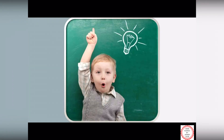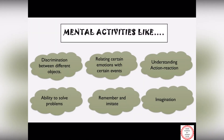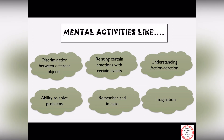Talking about brain development, we lay emphasis on mental activities like understanding the difference between two or more items — for example, differentiating food on the basis of its color. Understanding and relating emotions with certain events, like not laughing at somebody's funeral. Understanding action-reaction means if you study hard you may score good marks. Next is the ability to solve problems.